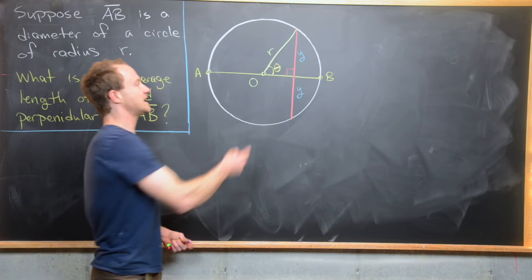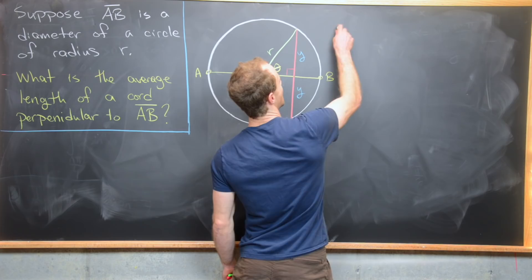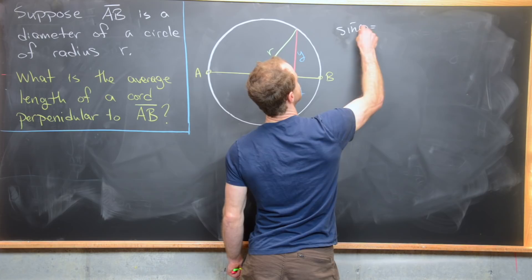So if we can somehow find the average value of that function, we'll be good to go. So now let's go ahead and write the length of this chord in terms of theta. So what we can notice is by trigonometry, we have sine of theta equals opposite over hypotenuse. So that's going to be Y over R.